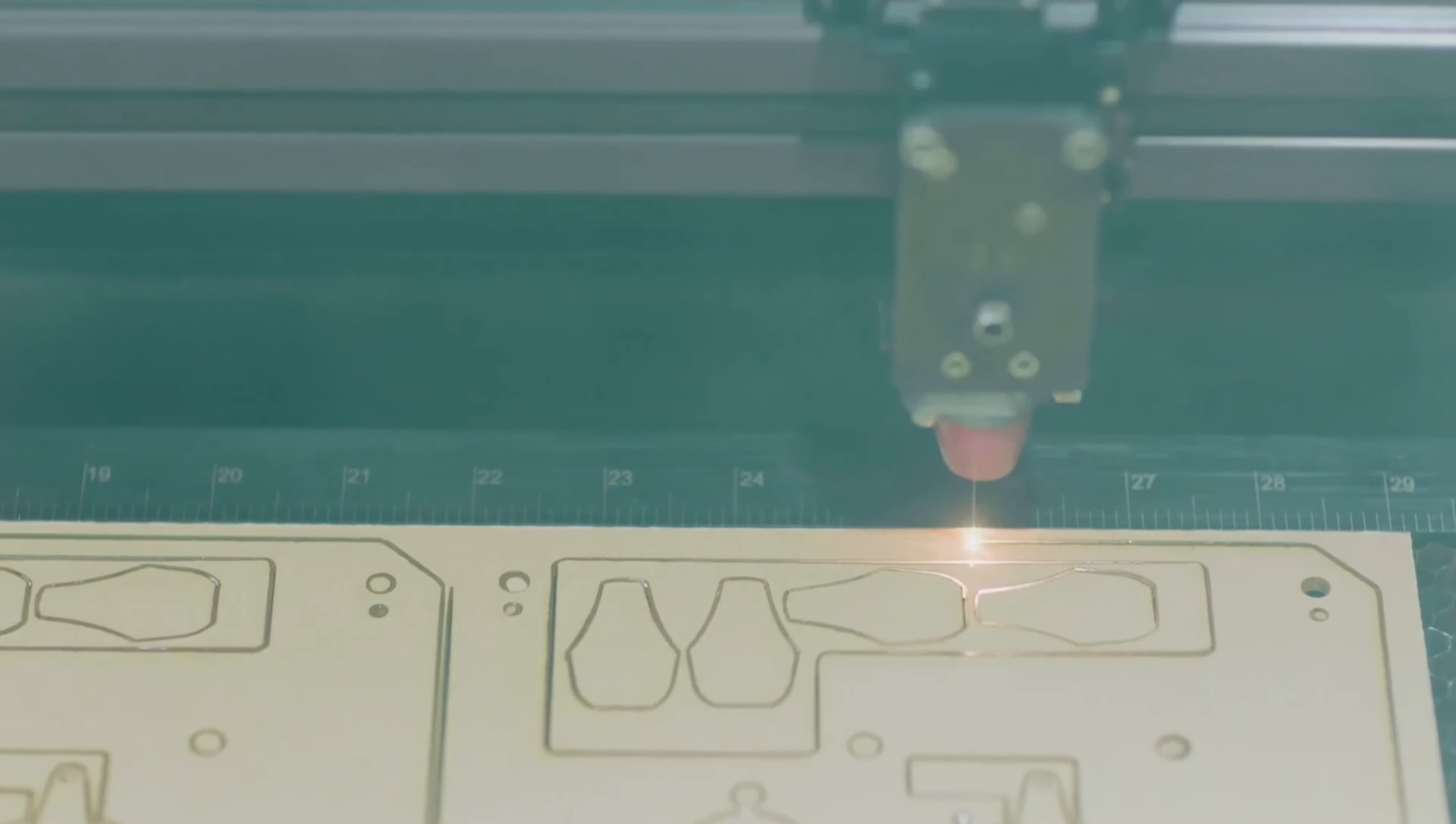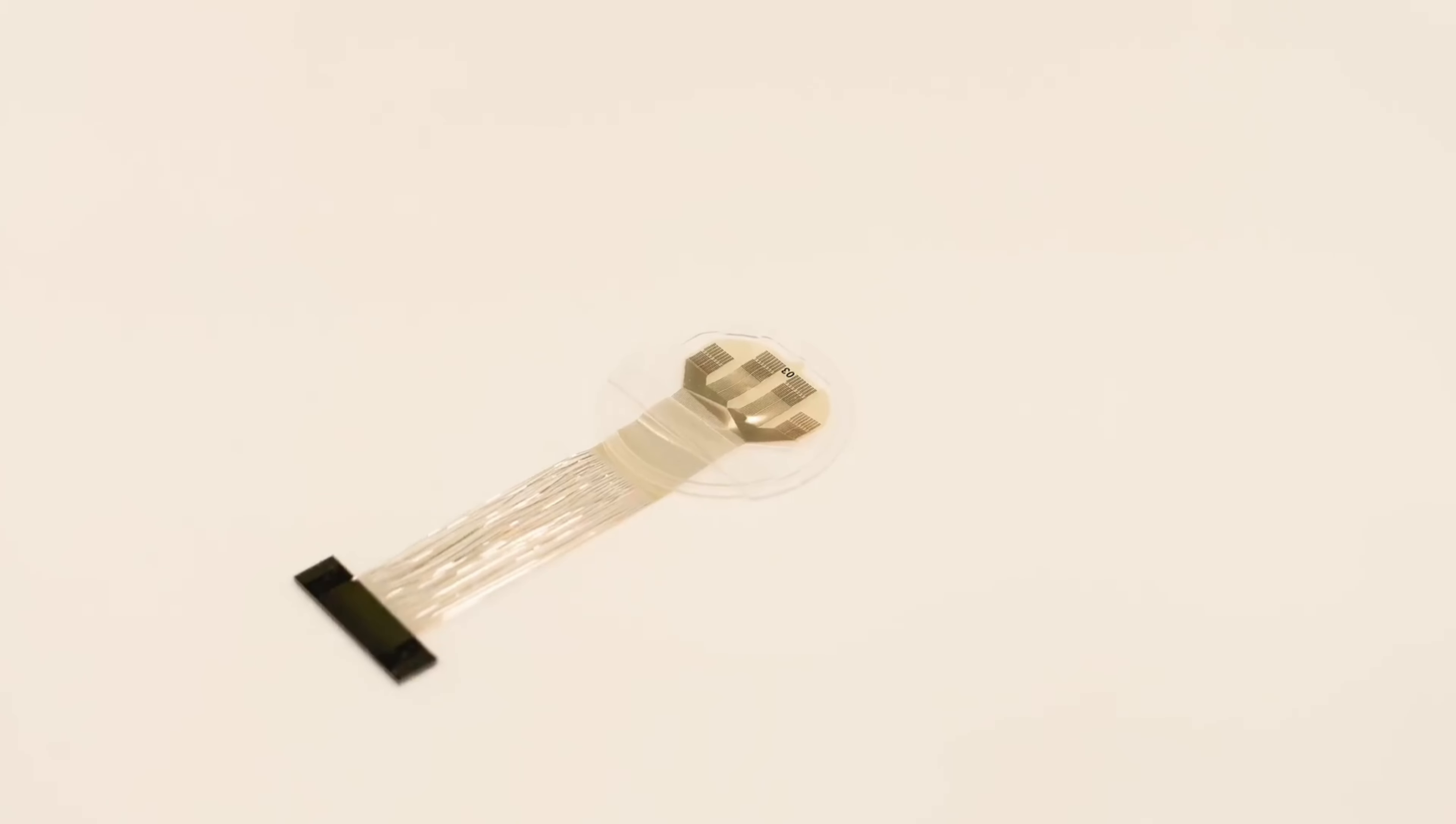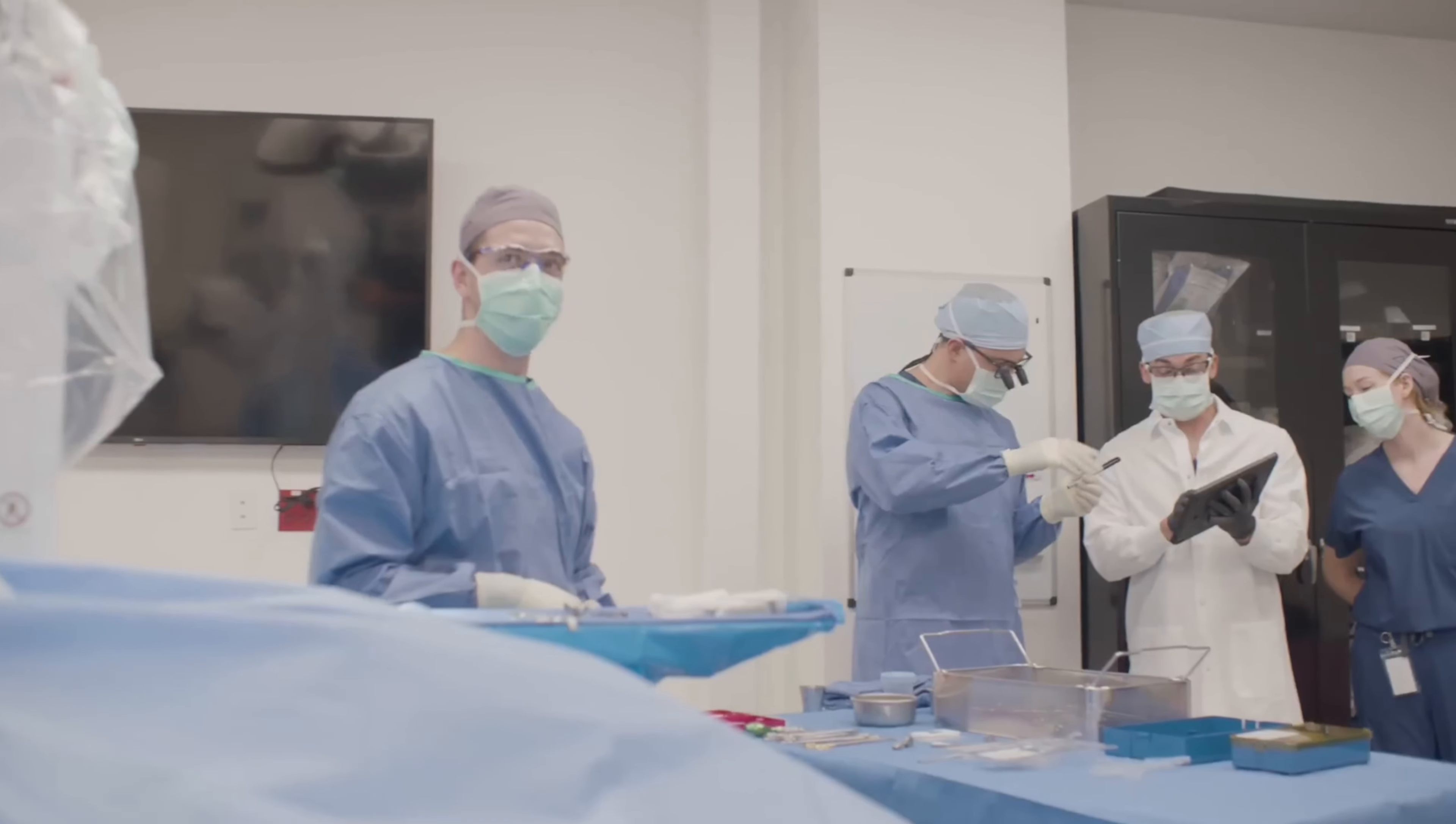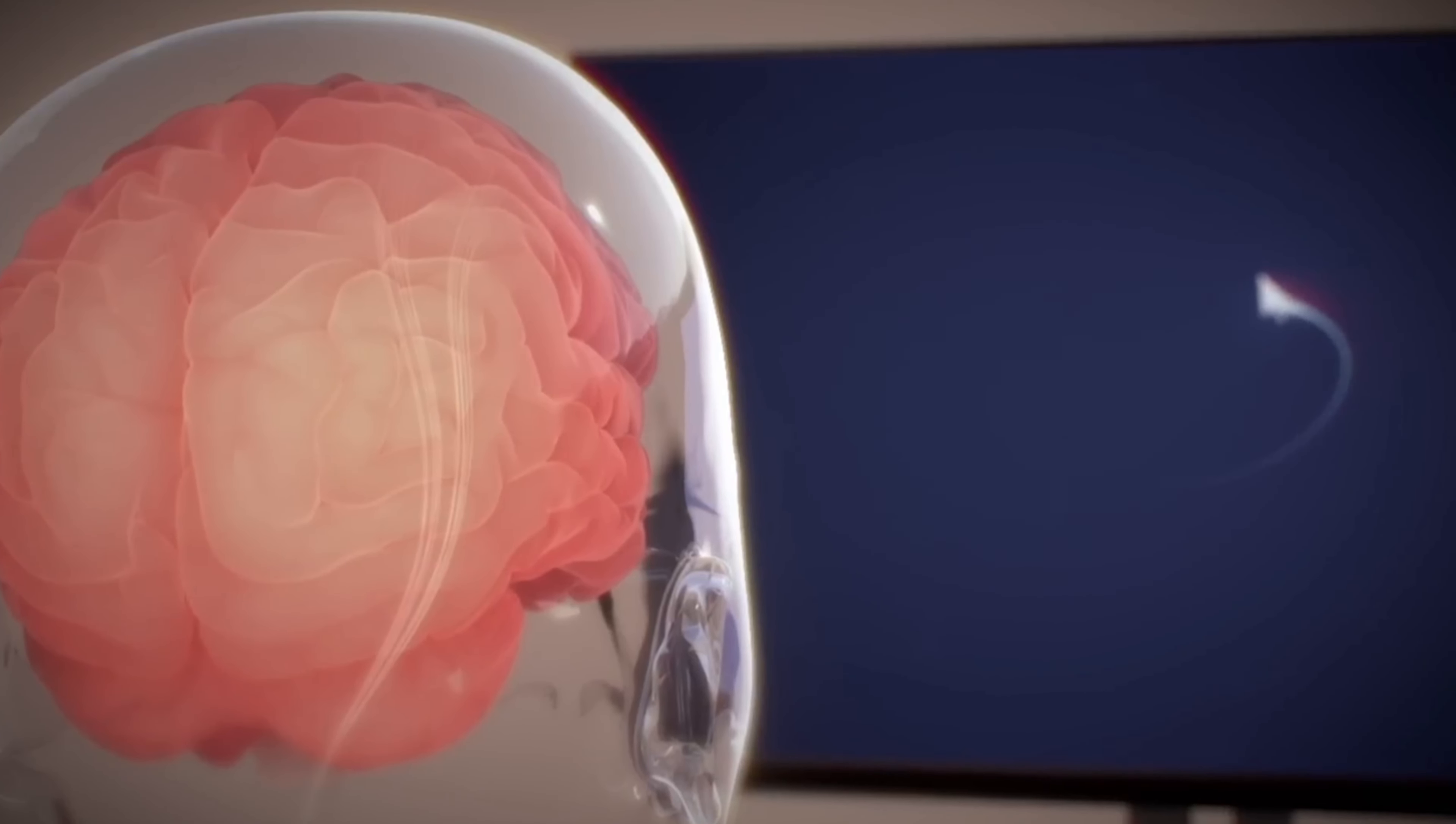As we wrap up our journey into the world of Neuralink, let's revisit our initial question. We've explored the intricate threads that connect the device to our neurons, the heart of the device, the chip, the lifeline that powers it all, the battery, and the biocompatible enclosure that ensures safety and compatibility. As we stand on the precipice of this new era, the question is no longer if we can merge humans and computers, but how we will navigate this new reality.